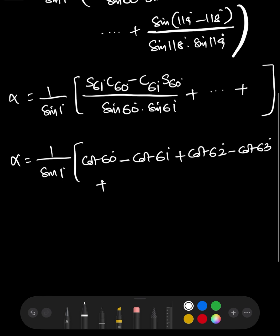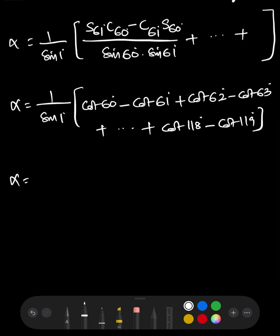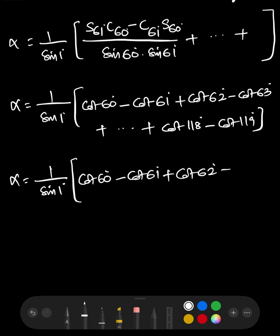...plus and so on, the last values being cot 118° − cot 119°. So α = (1/sin 1°) · [cot 60° − cot 61° + cot 62° − cot 63° + ... + cot 118° − cot 119°].